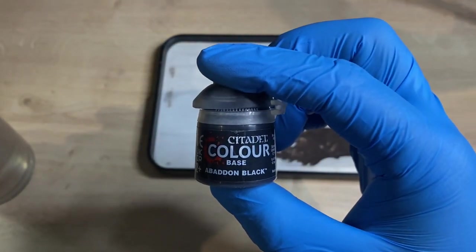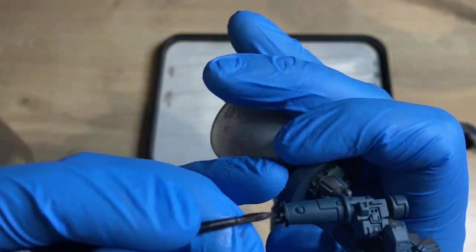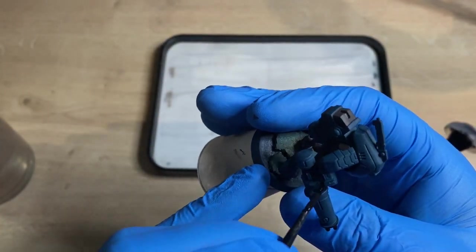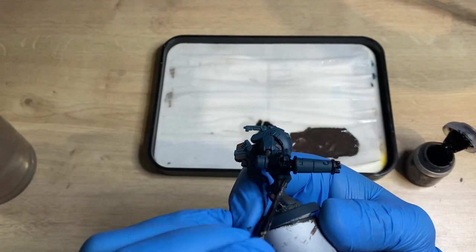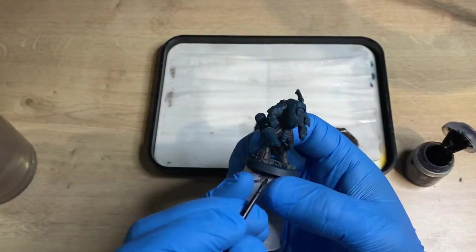On to our next color now, and it's going to be trusty old reliable Abaddon Black. We're going to be using this to pick in all of the weapon details that would traditionally be black. So have a look on the box art or the Games Workshop website, and we're just going to go around and fill in all of those areas on your weapon specifically that should be black.